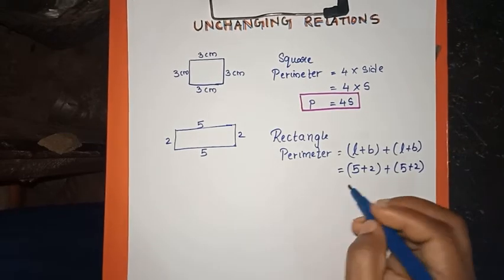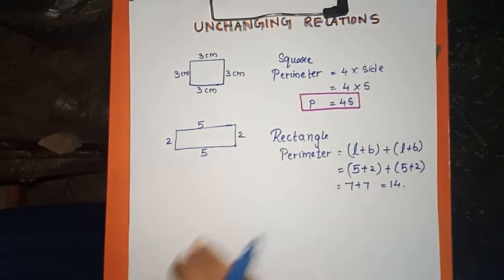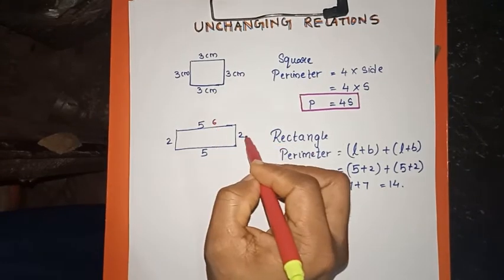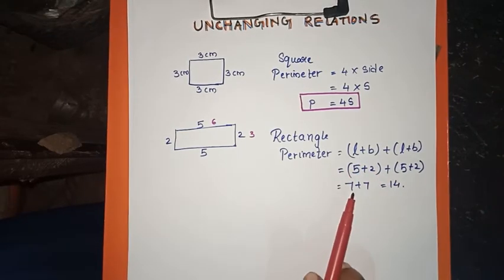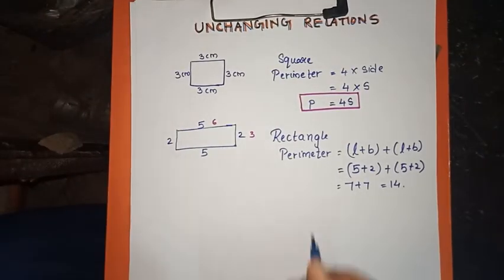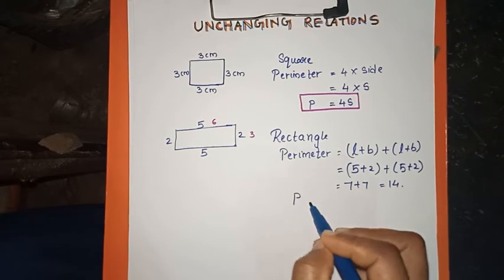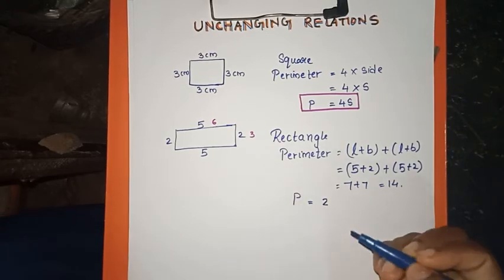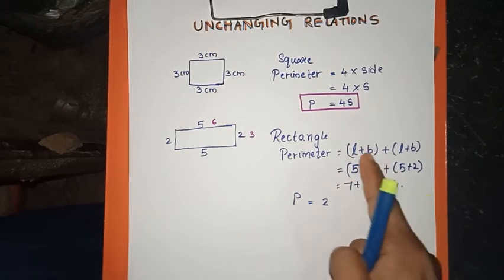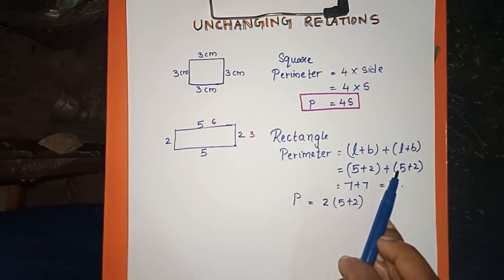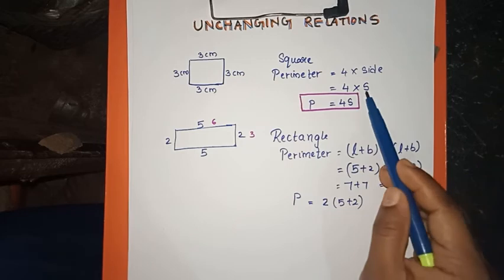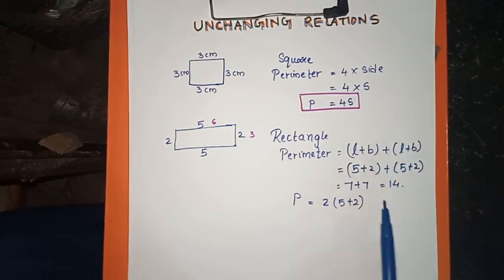We can add 7 plus 7. For another rectangle with sides 6 and 3, we can add 6 plus 3 plus 6 plus 3. To find a common factor, we use 2 into (L plus B). So we write 2 into 5 plus 2, or more generally 2 into (L plus B).